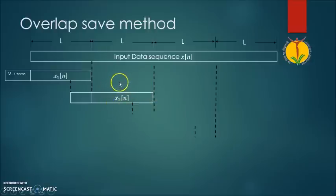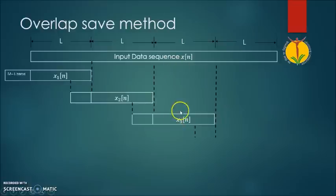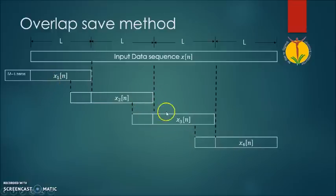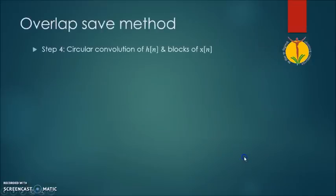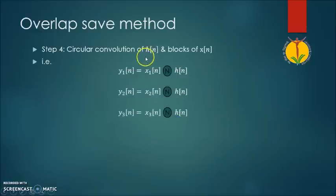When forming the second block, we have to add M-1 previous samples from the previous block. Similarly, for the third block, we take samples from the input data sequence along with M-1 samples from the previous block. Likewise, we form different blocks of the input data sequence, denoted as x1, x2, x3, and x4. In the next step, we perform circular convolution between these blocks and the impulse response, forming output data sequences y1, y2, and y3.